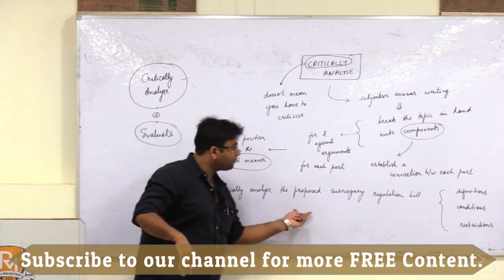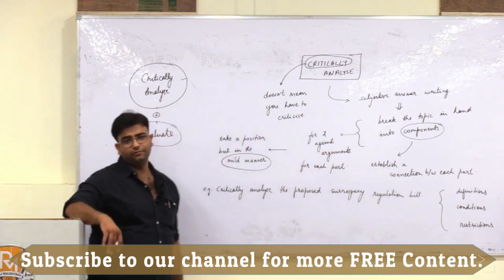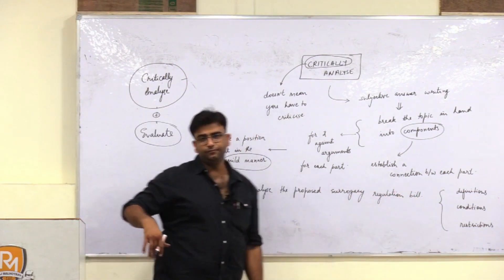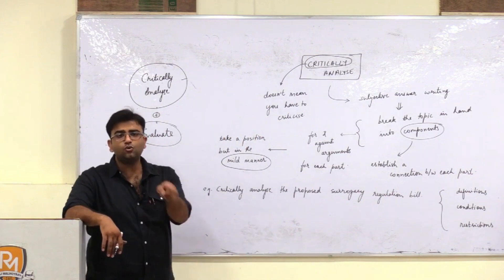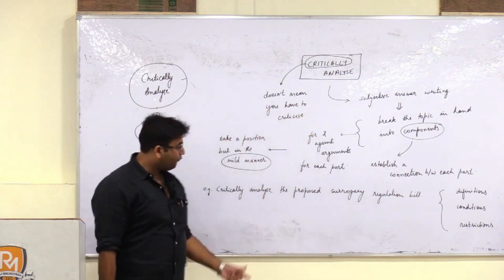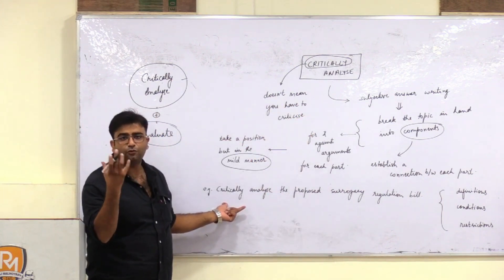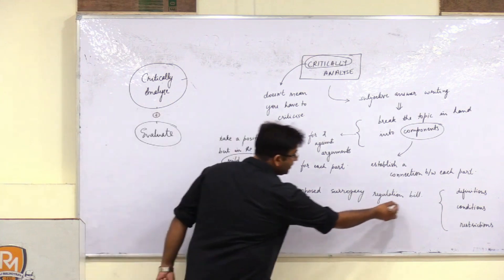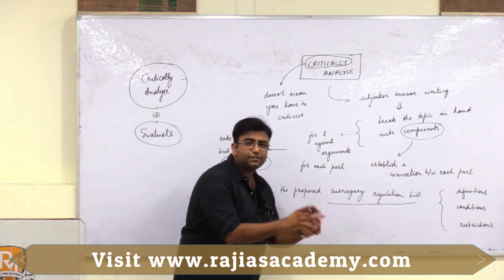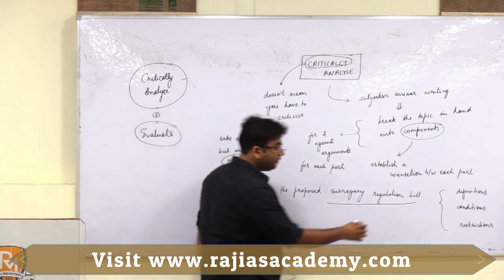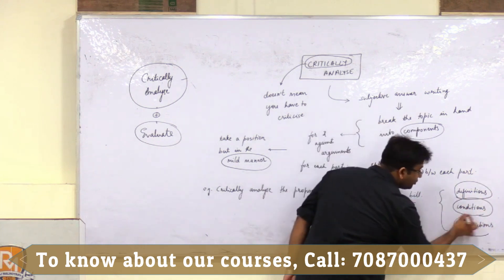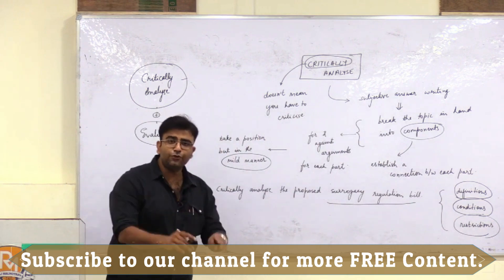For example, there is a question: 'Critically analyze the proposed surrogacy regulation bill.' The critical analysis of this question will be different for every student. As part of the procedure, first you have to see what is the topic that you have to analyze — the topic is the proposed surrogacy regulation bill. Second, break this particular topic into different components: there will be definitions, there will be conditions of surrogacy, and there will be restrictions on surrogacy.